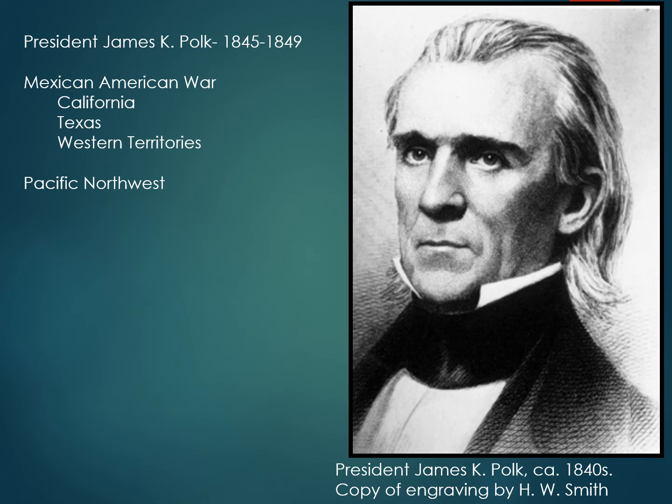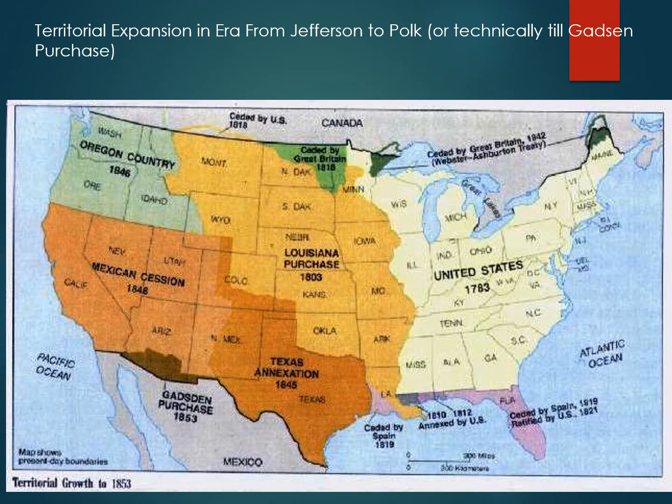These types of expansionism operated in some cases as a safety valve for incoming immigration to the United States, but they also provided the catalyst for a major controversy. This map basically shows you the territorial expansion from this era — you can see the huge territories acquired — and the expansion into these territories immediately sparked sectional crises in the United States that led to the Civil War.